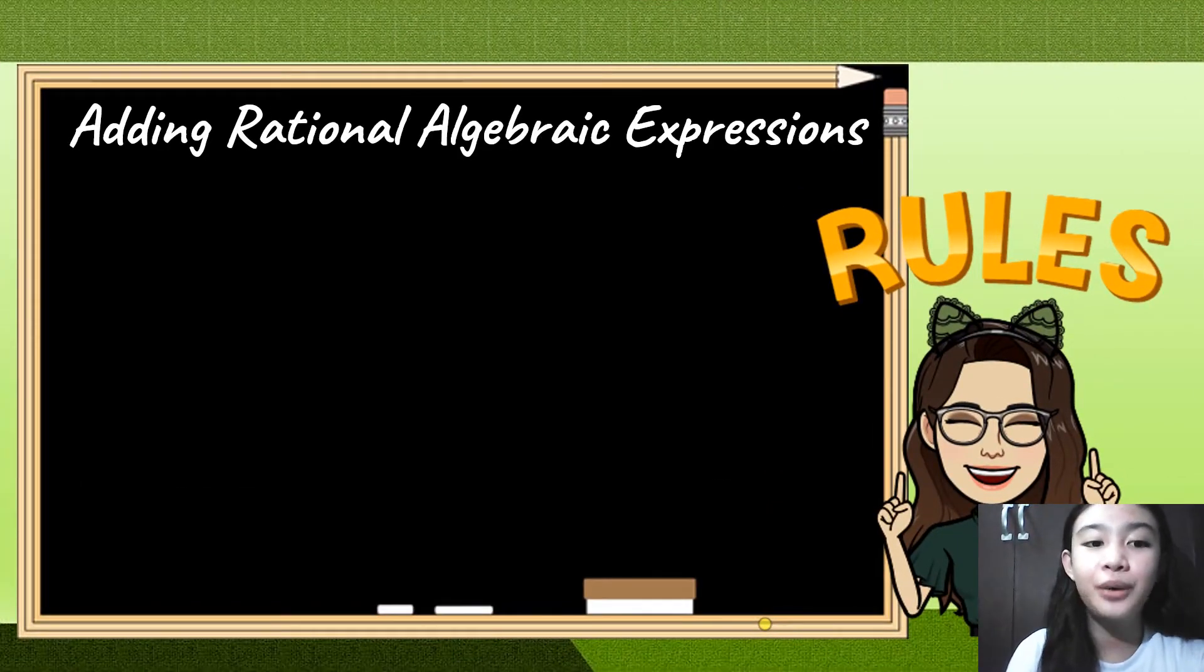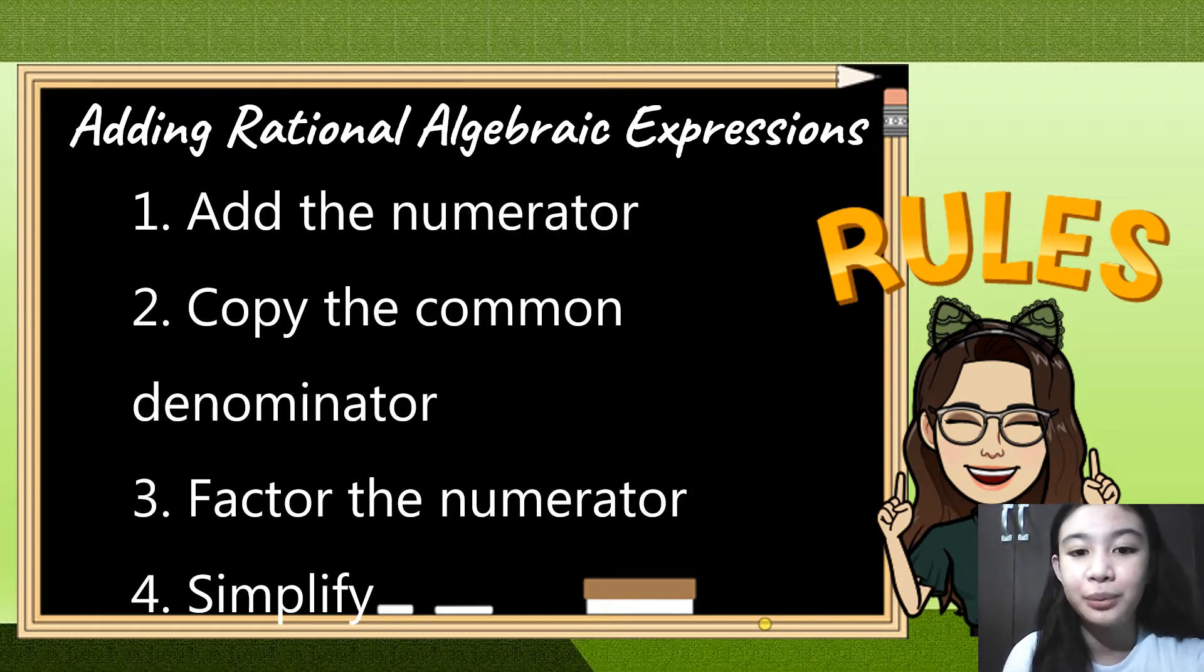Okay, so first, let's have adding Rational Algebraic Expression. But before that, we should know the different rules of adding. First, add the numerator. Next, copy the common denominator. Then, factor the numerator and simplify it.